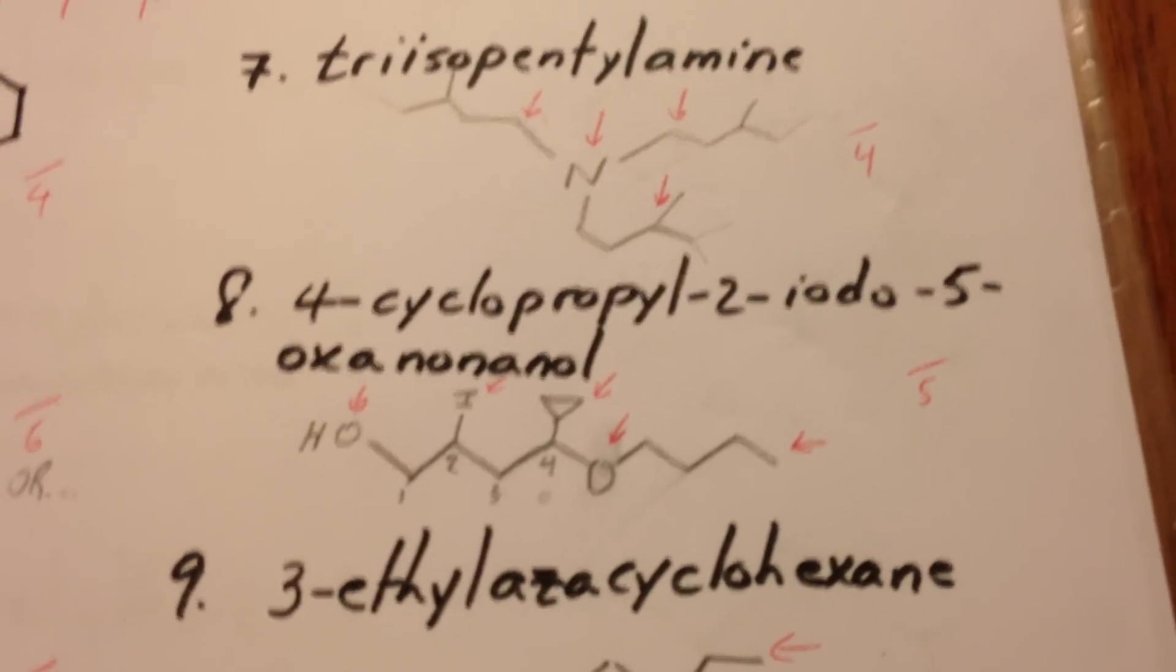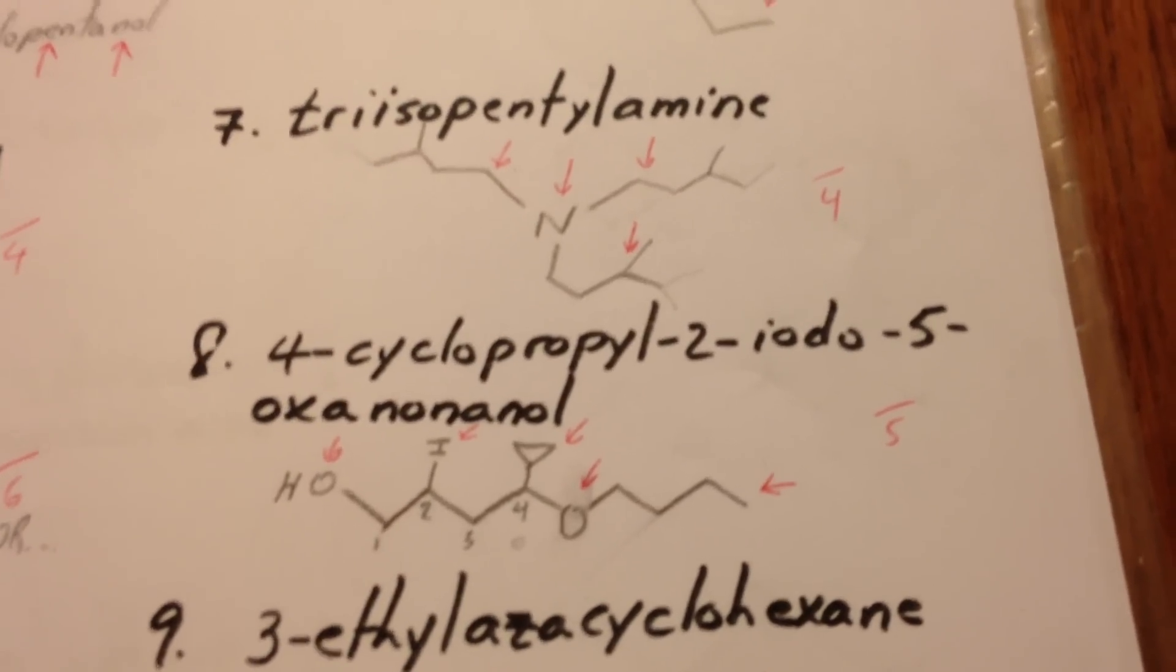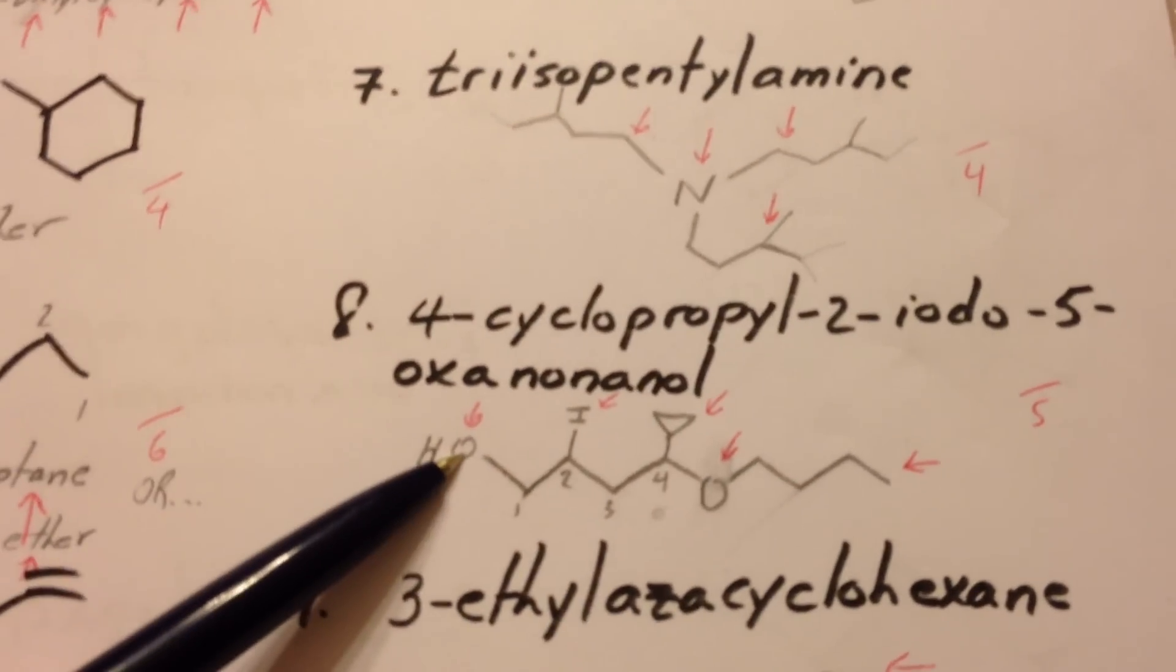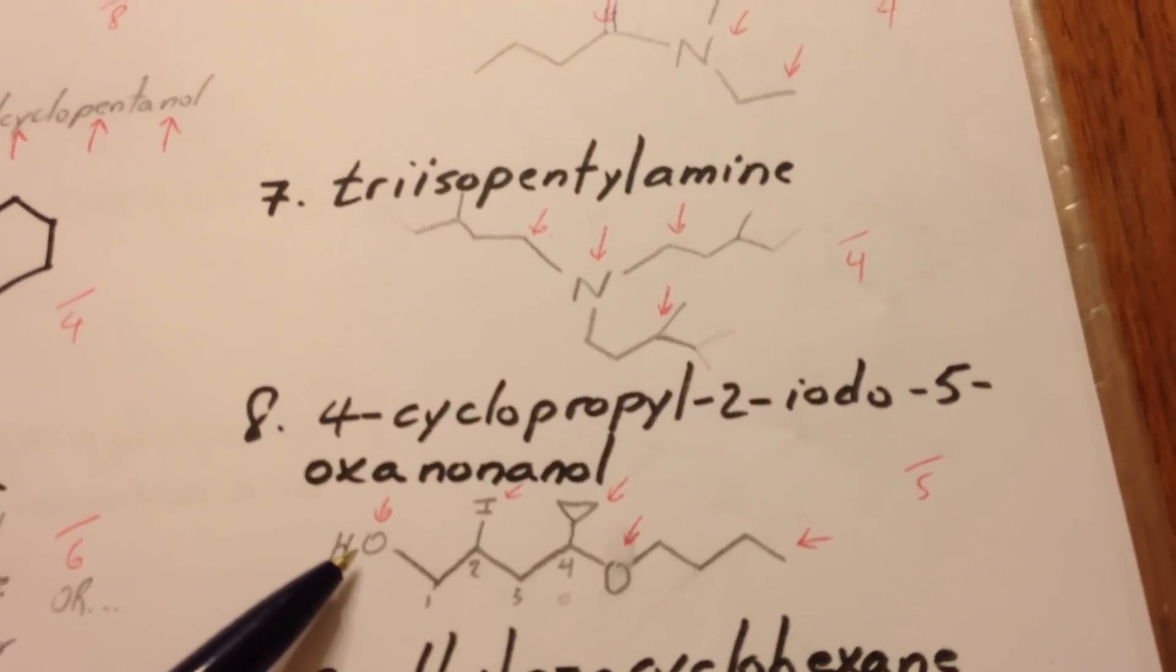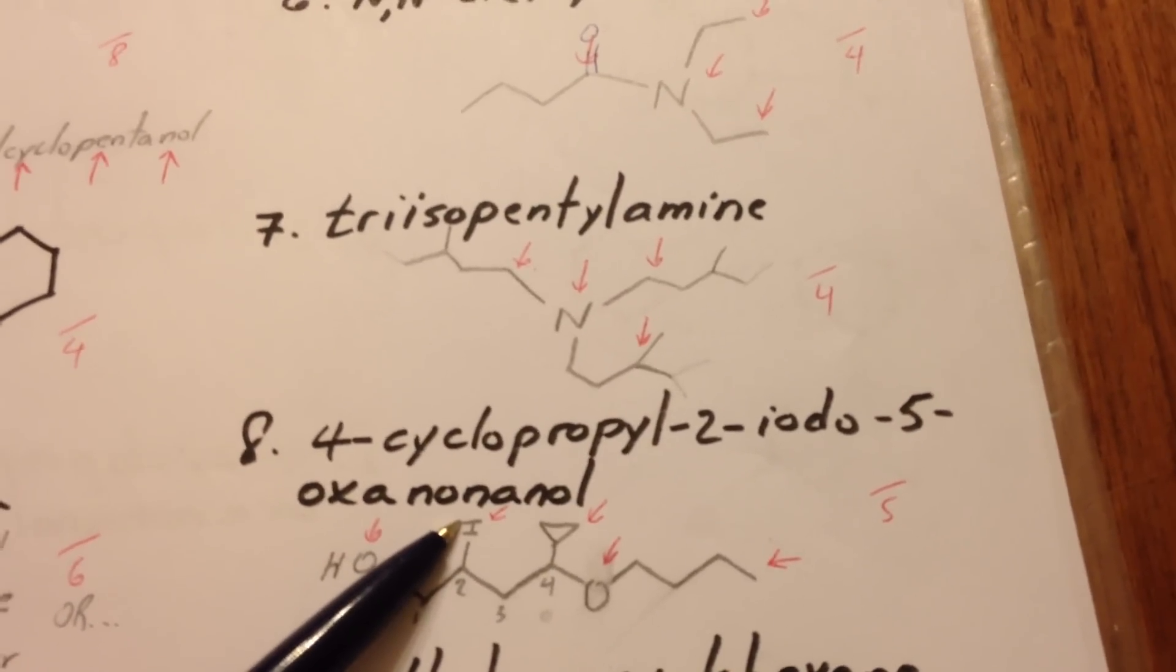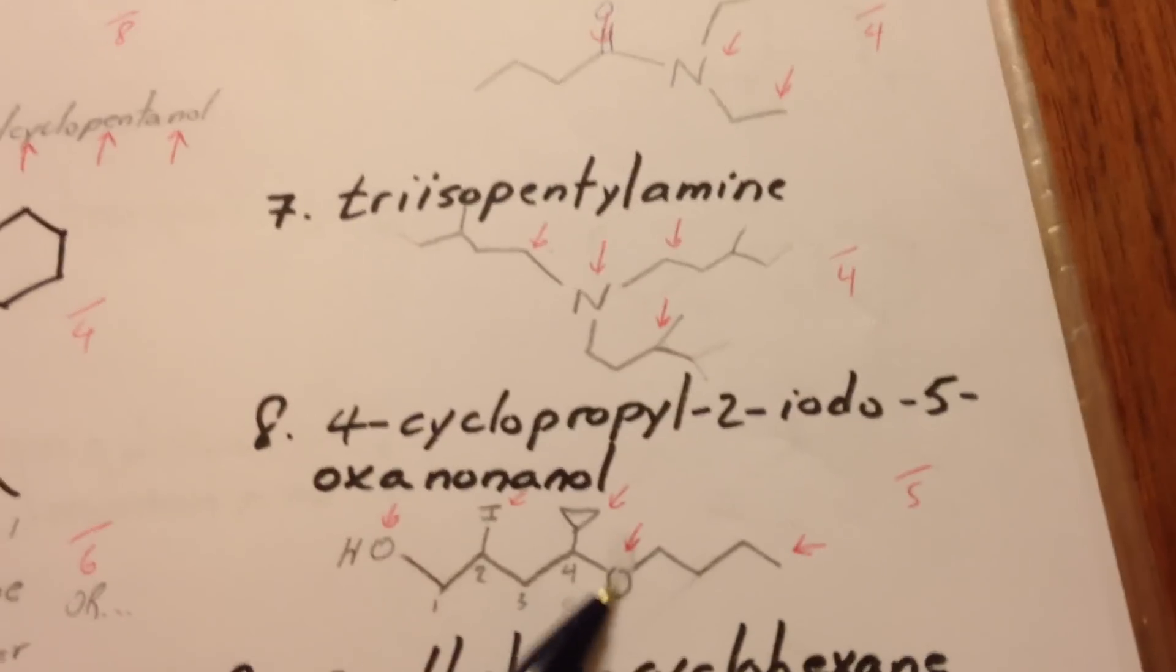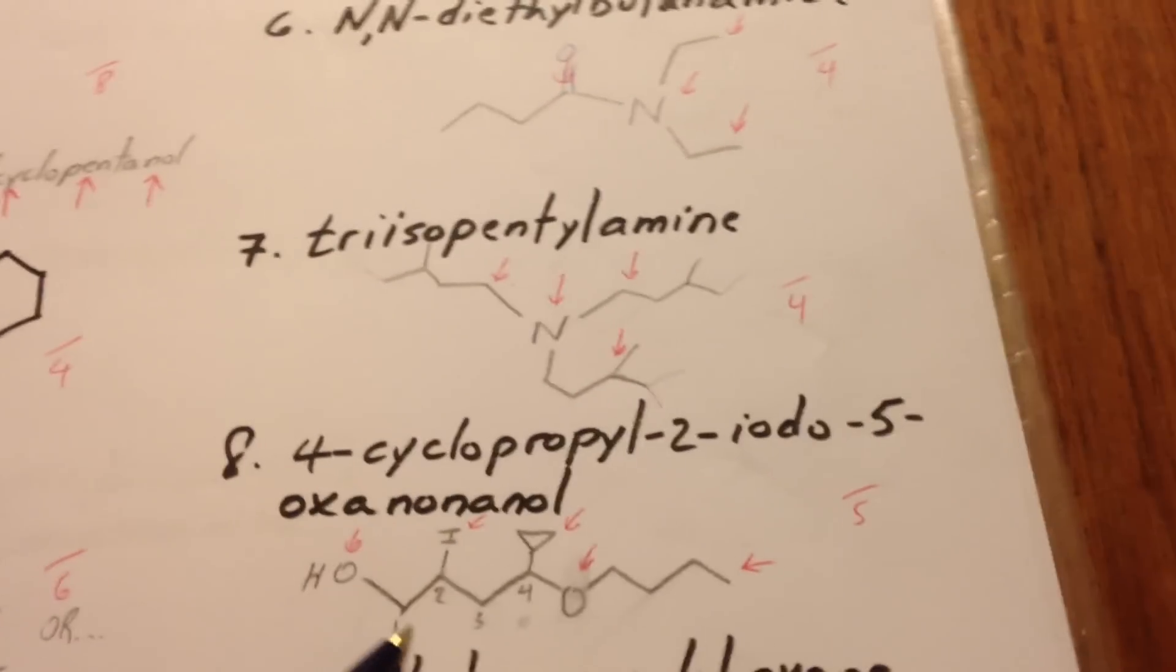The next molecule is called 4-cyclopropyl-2-iodo-5-oxanonanol. So the alcohol group is the highest priority here. There's a cyclopropyl group, an iodo group. And we say 5-oxa because there's an ether in the molecule. And the longest chain, again...